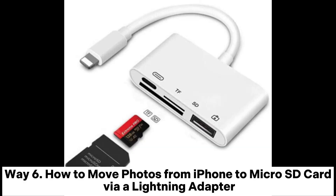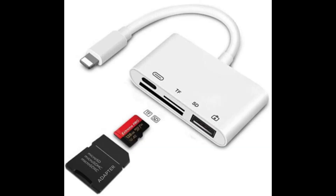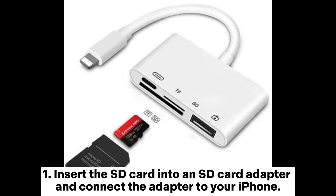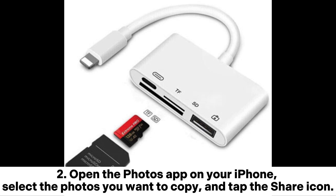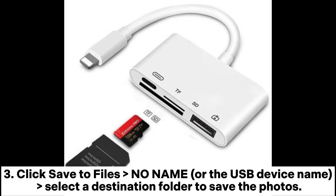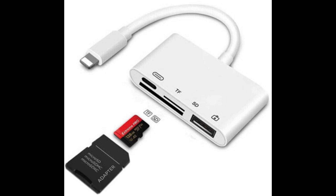Way 6: How to move photos from iPhone to micro SD card via a lightning adapter. Step 1: Insert the SD card into an SD card adapter and connect the adapter to your iPhone. Step 2: Open the Photos app on your iPhone, select the photos you want to copy, and tap the share icon. Step 3: Click 'Save to Files', select the USB device name, and choose a destination folder to save the photos.